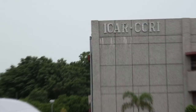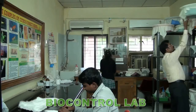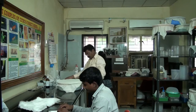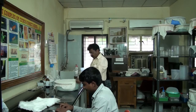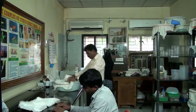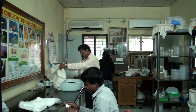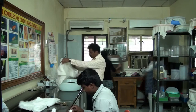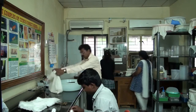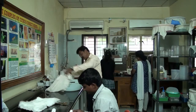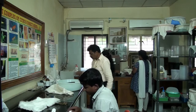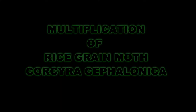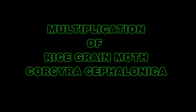In the biocontrol lab of the Entomology Section, under laboratory conditions, rice grain moth Corcyra cephalonica eggs are provided as larval feed. The culture of rice grain moth has to be continuously multiplied for a continuous supply of Corcyra eggs for Mallada multiplication.